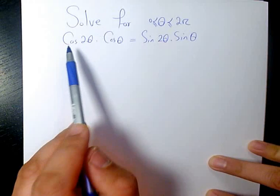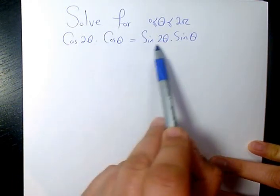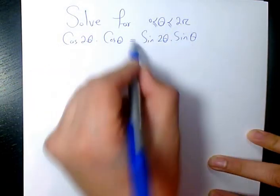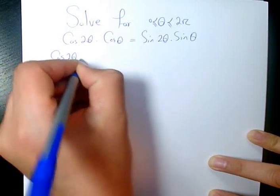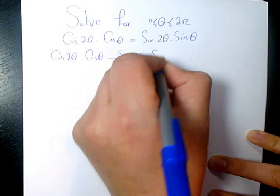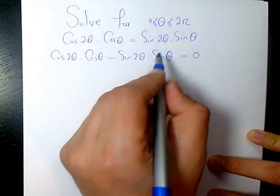We need to solve this trigonometric equation for this video, which is cos 2θ cos θ equals sin 2θ sin θ. I need to move the right hand side to the left hand side, so it's going to be cos 2θ cos θ minus sin 2θ sin θ, that will be equal to 0.